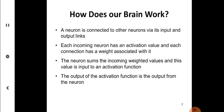How does our brain work? A neuron is connected to other neurons via input and output links. Each incoming neuron has an activation value and each connection has a weight. The neuron sums the incoming weighted values and this value is input to an activation function. The output of the activation function is the output from the neuron.